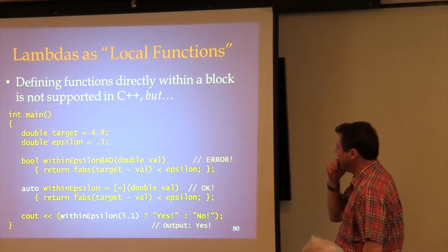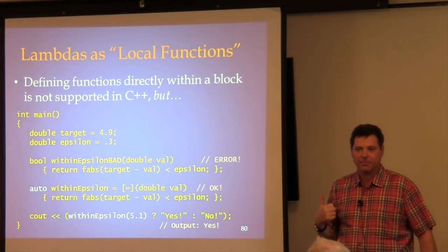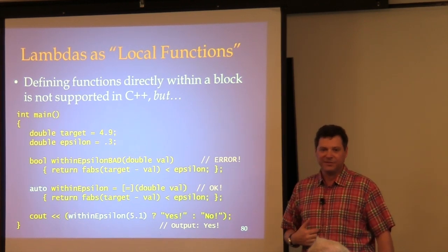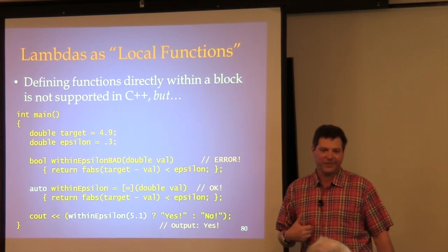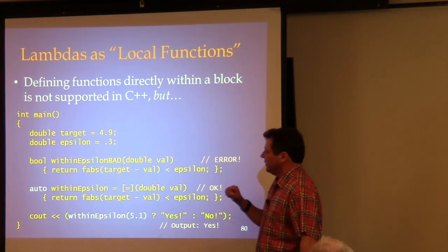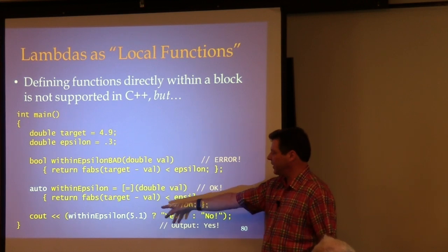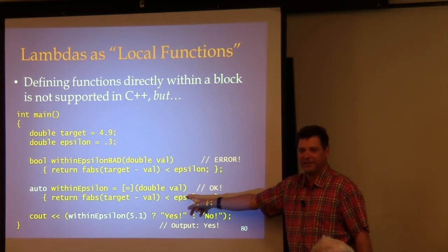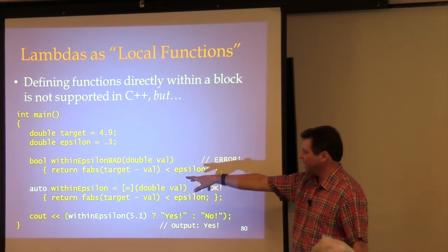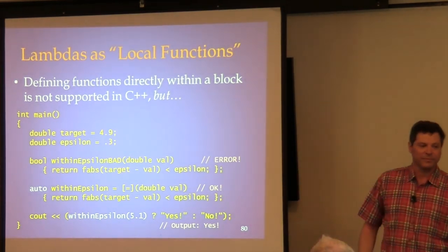In C++ and C, it's illegal to have a local function within a function. You cannot directly define a function inside another function. But lambdas give you a way around this: you can declare an `auto` variable and initialize it with a lambda. The compiler knows the type even if you don't, and now you have a way to refer to that lambda by name and call it just as if it were an ordinary function.